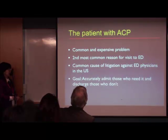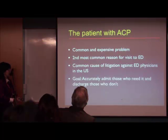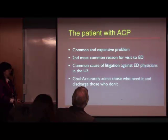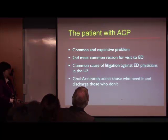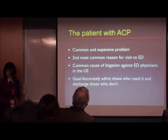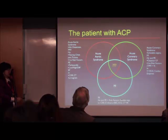A patient with acute chest pain is a common and expensive problem seen in the ED. It's the second most common reason patients end up in the A&E department and a common cause of litigation against A&E physicians in the US. A patient comes in, gets worked up, gets discharged, and then dies — and then gets sued. The goal is to accurately triage patients who need admission for workup and to discharge patients who do not.